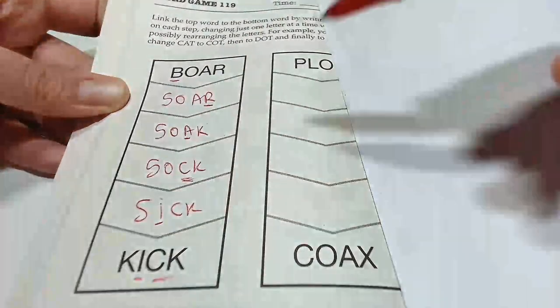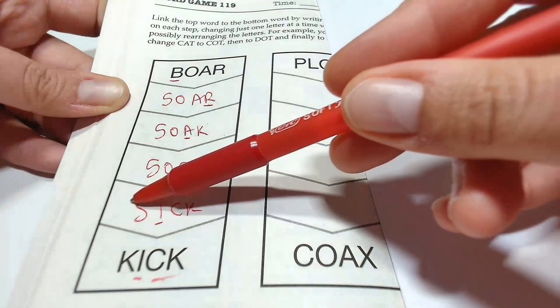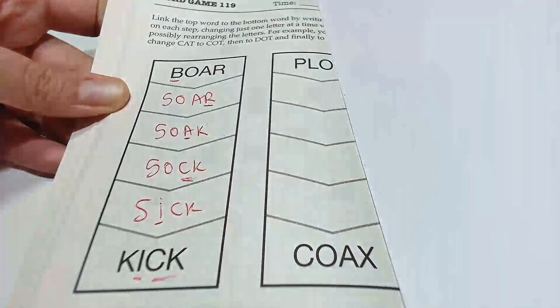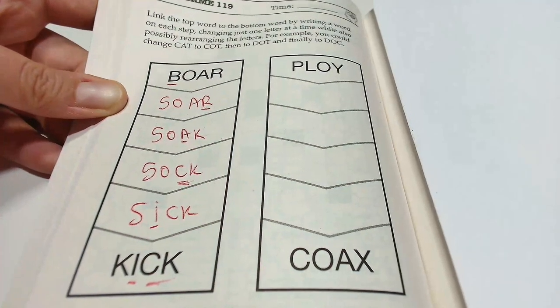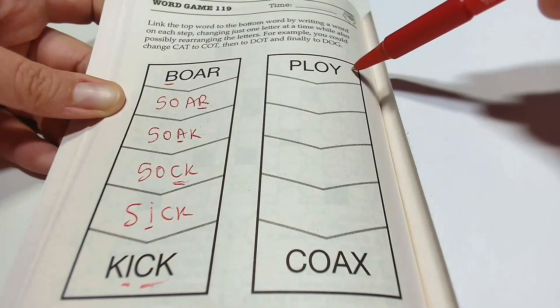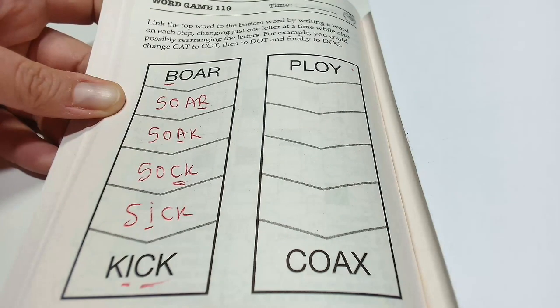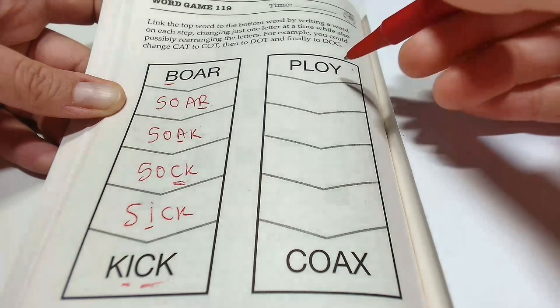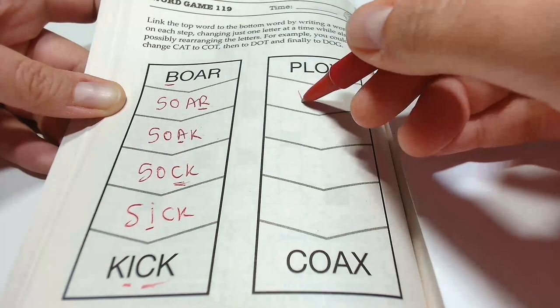And the last one is changing S into K. Let's look at the second word - PLOY. How do we get from PLOY to COAX? For example, changing Y into T - PLOT.